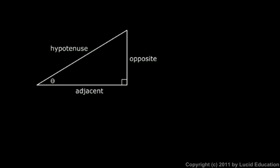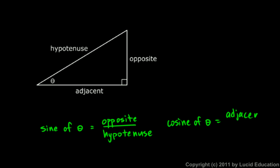I'll write both of those down. The sine of theta - that's S-I-N-E - the sine of angle theta is the length of the opposite side divided by the length of the hypotenuse.